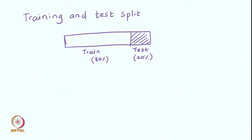If by any chance your model gets to see the test data, then the performance that you report on test data will not stand the scrutiny of time, in the sense that you might get an over-estimation of the model performance if your test data is accidentally leaked to the model at training time.